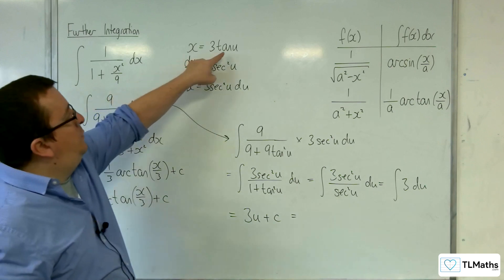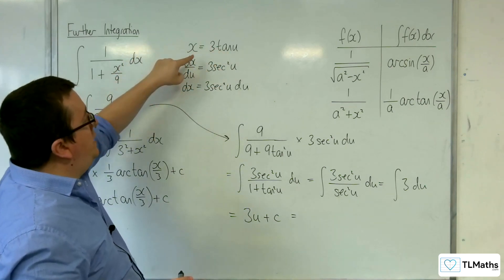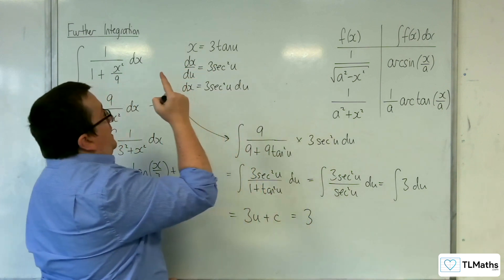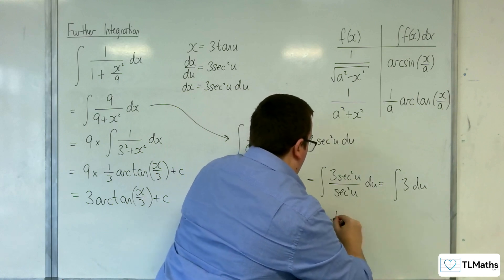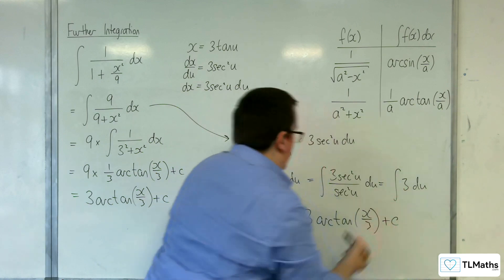Now, if x is equal to 3 tan u, divide both sides by 3, we get x over 3 equals tan u. So u would have to be arctan of x over 3.